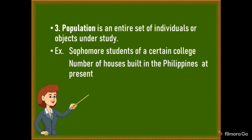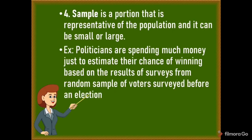The third term is population. It is an entire set of individuals or objects under study. Examples include sophomore students of a certain college, and number of houses built in the Philippines at present. The fourth term is sample. A sample is a portion that is representative of the population, and it can be small or large. For example, politicians spend much money to estimate their chance of winning based on results of surveys from a random sample of voters surveyed before an election.